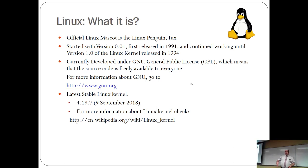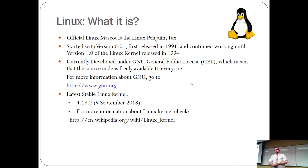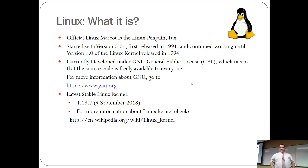The latest stable kernel is 4.18.7. There's a link to show you where all the kernels are — they release a stable kernel every few months. The trick to know if you're running a stable or unstable kernel: the second set of digits, if it's even it's stable; if it's odd, like 4.17, then it's an unstable kernel. That's just how they do their numbering.